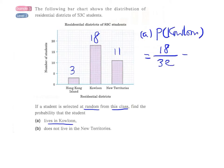So the answer will be 9 over 16. And for Part B, find the probability that the student does not live in the New Territories.